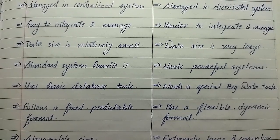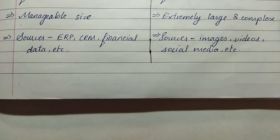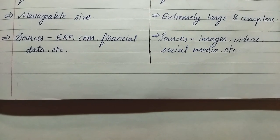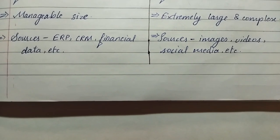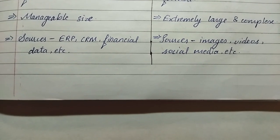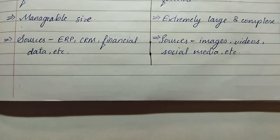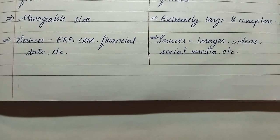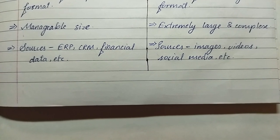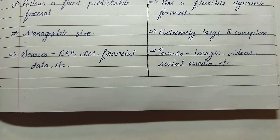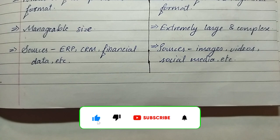Traditional data follows a fixed predictable format, while big data has flexible dynamic formats. In traditional data the data is a manageable size, while in big data the data is extremely large and complex. The sources of traditional data are ERP, CRM, financial data, etc., and for big data the sources are images, videos, social media, etc.